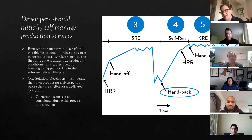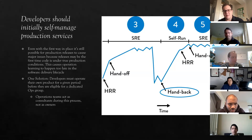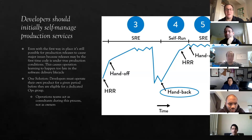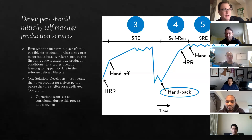The underlying principle is something almost every organization with operations and development teams can do: have developers run what they build. This runs counter to what most developers want to do — they absolutely hate running what they own. But that's a great way to make sure developers make those processes as easy to use as possible if they have to share that pain.